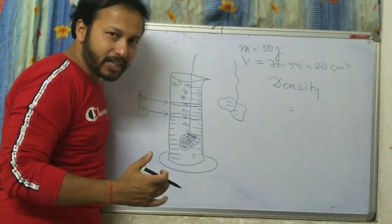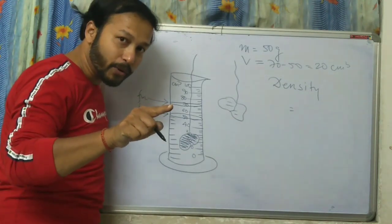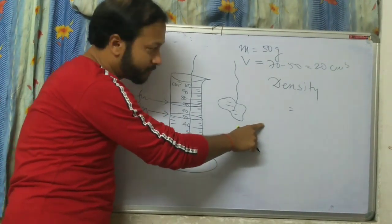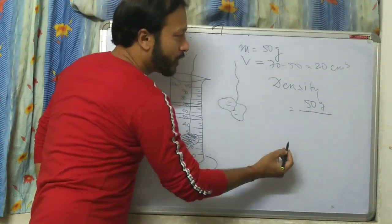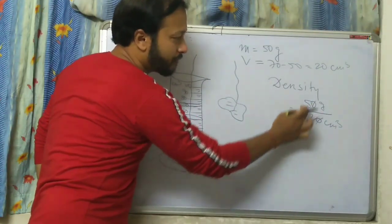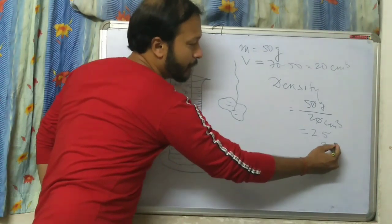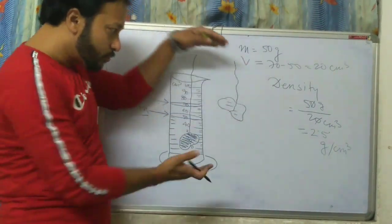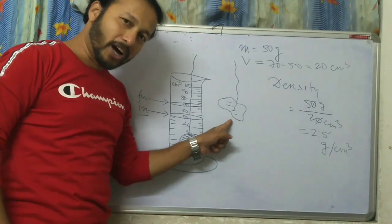We know that density equals mass divided by volume. The mass is 50 grams and the volume is 20 centimeter cube, so density equals 50 divided by 20, which is 2.5 gram per centimeter cube. In this way we can calculate the density of a given solid.